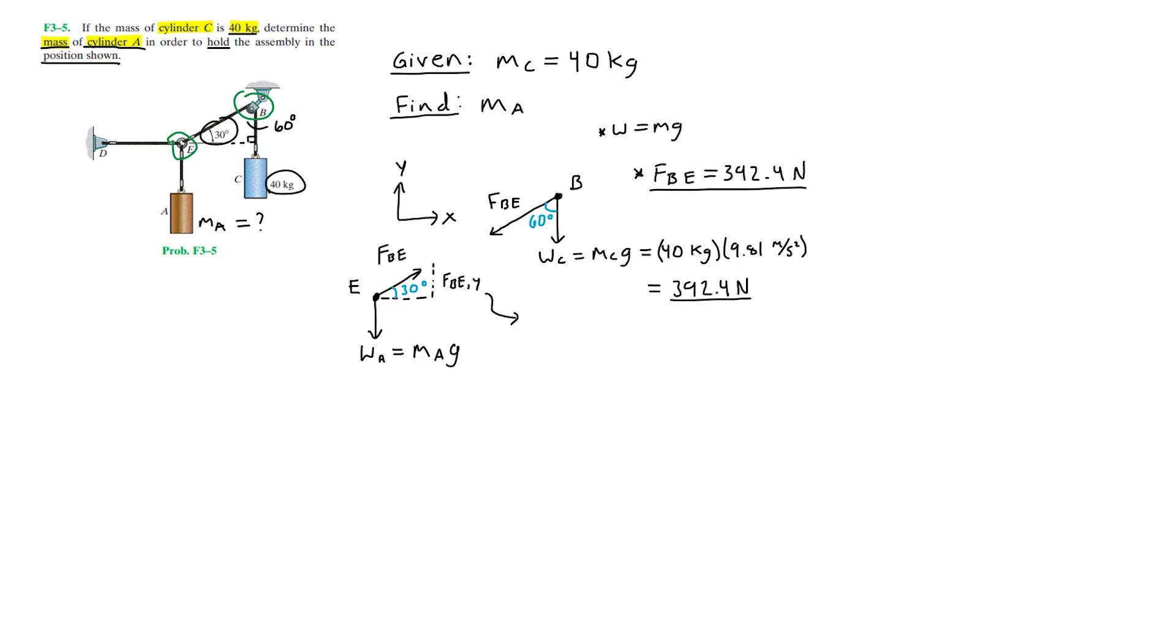In order to find the Y component of this force, we can use trigonometry. Since we know that sine of 30 degrees is equal to the opposite side of the angle, which is FBEY, over the hypotenuse, which is FBE, we have sine 30 equals FBEY over 392.4 newtons.